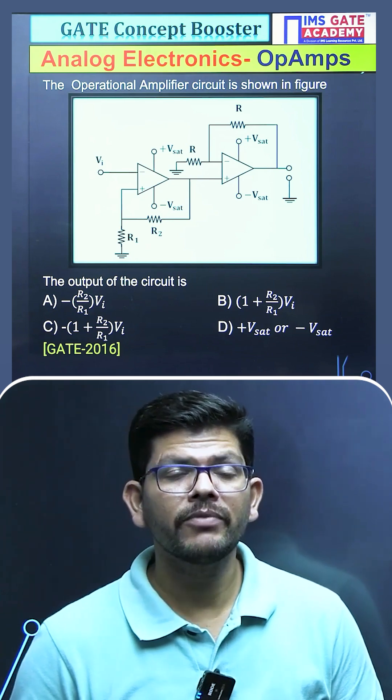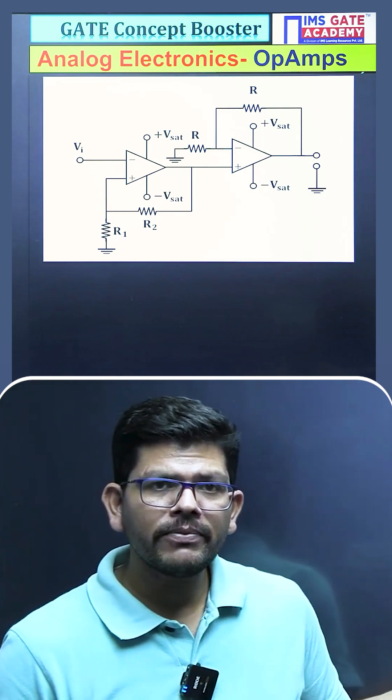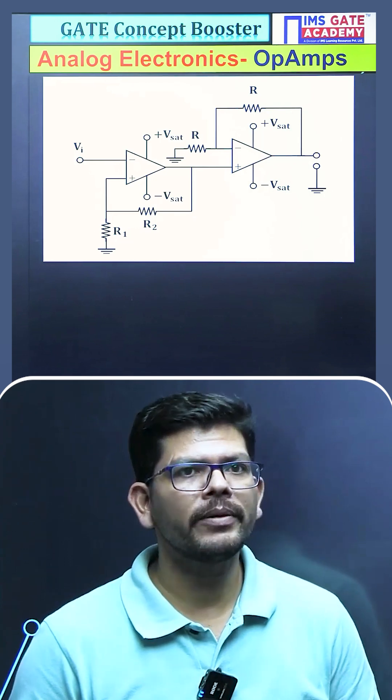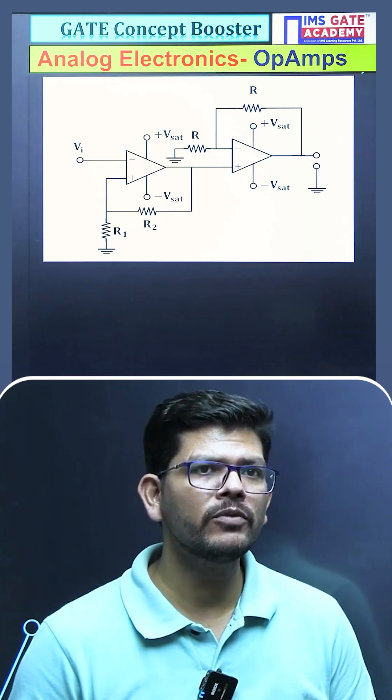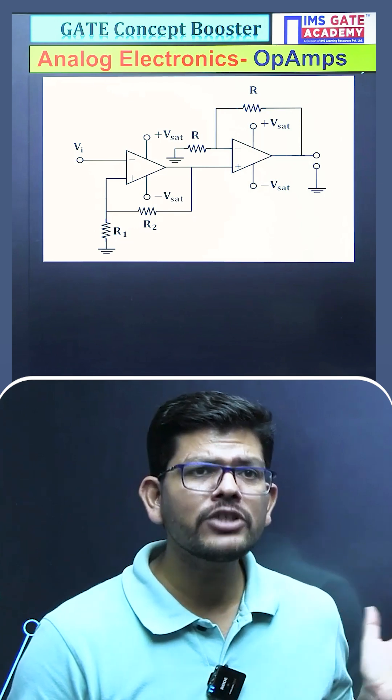For example, just see we have been given this circuit. In the first op-amp, first find the output of the first op-amp. Then that will act as an input for the second op-amp and then you can calculate the output.